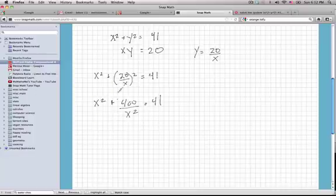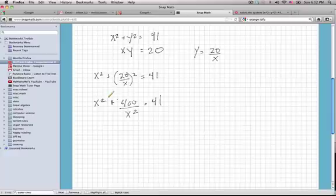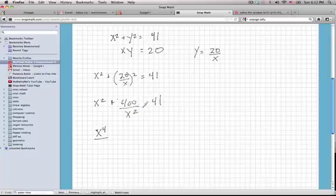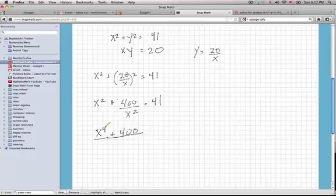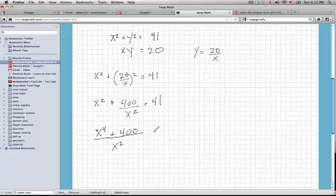Let's get a common denominator on the left-hand side here. Multiplying x squared by x squared over x squared, I will get x to the fourth over x squared. 400 already has a denominator of x squared, so I'm just going to leave that as is. Both now have a common denominator of x squared, so I will write them both over the same denominator.